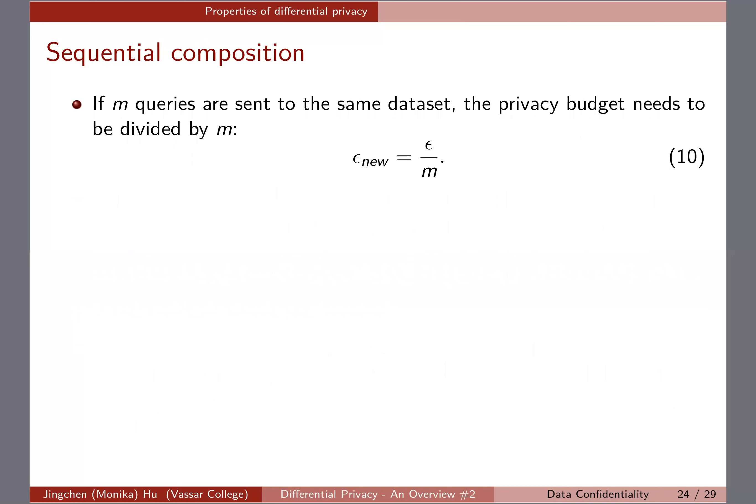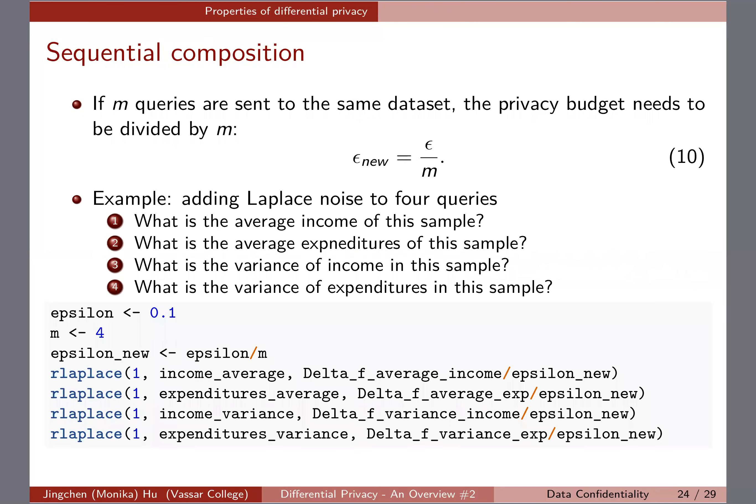For sequential composition: if m queries are sent to the same dataset, an easy approach is to divide the privacy budget by m. So if your total ε is 0.1 and three queries are sent, each query gets ε/m. The example here uses four queries: average income, average expenditures, and the variance of two variables. Start with ε = 0.1 and four queries, so define ε_u = ε/m = 0.025.